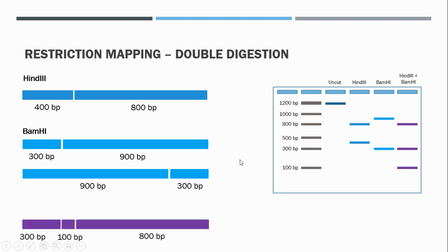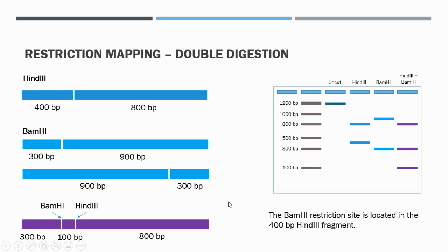Looking at these three fragments — 800, 300, and 100 base pairs — the 800 base pair fragment produced by HindIII is unaffected, which means the BamHI restriction site does not fall within that 800 base pair fragment. However, the HindIII 400 base pair fragment is no longer present; instead we have a 300 and a 100 base pair fragment. This tells us that the HindIII 400 base pair fragment contains the BamHI restriction site, so the BamHI site is located within the HindIII 400 base pair fragment.